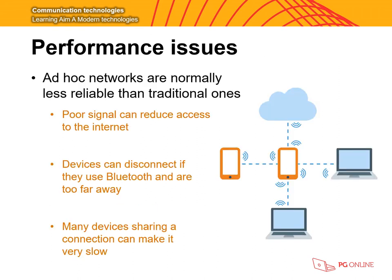Another issue with ad hoc networks is performance. They are normally less reliable than traditional networks. Poor signals can reduce access to the internet, and if you lose your connection while transferring a file halfway through, it may stop and fail, which can frustrate the user. Devices can also disconnect if using Bluetooth from too far away — on a mobile phone it's roughly 10 meters before the connection is lost. Also, many devices sharing a connection can make it very slow, which often frustrates users.